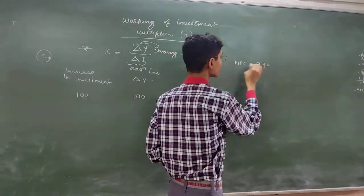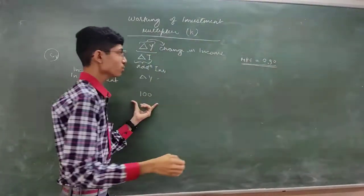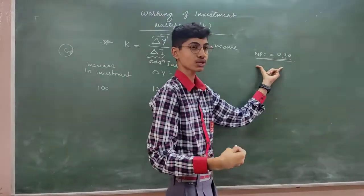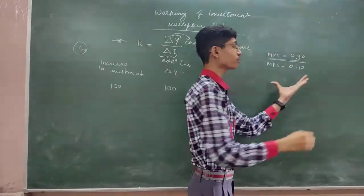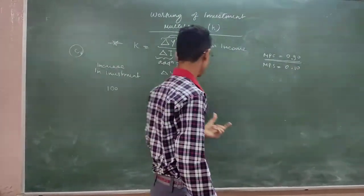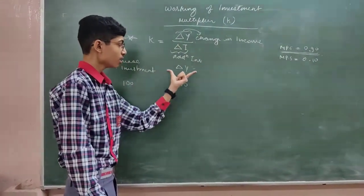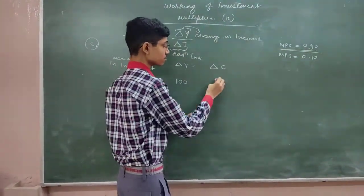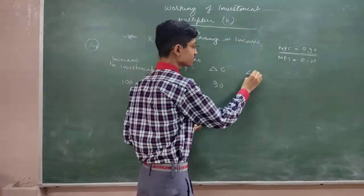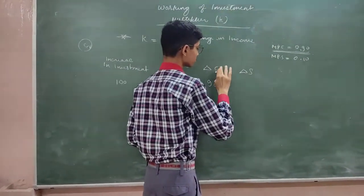Meaning, out of total income which I have now, 100 crores, I will consume 90 crores. If I have saved, then I will save 10 crores. So consumption is 90 and savings was 10.